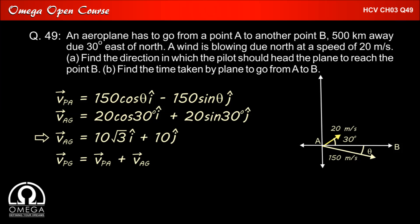Now we know that velocity of plane with respect to ground equals velocity of plane with respect to air plus velocity of air with respect to ground. Therefore, velocity of plane with respect to ground is (150 cos theta + 10√3) i plus (10 - 150 sin theta) j.